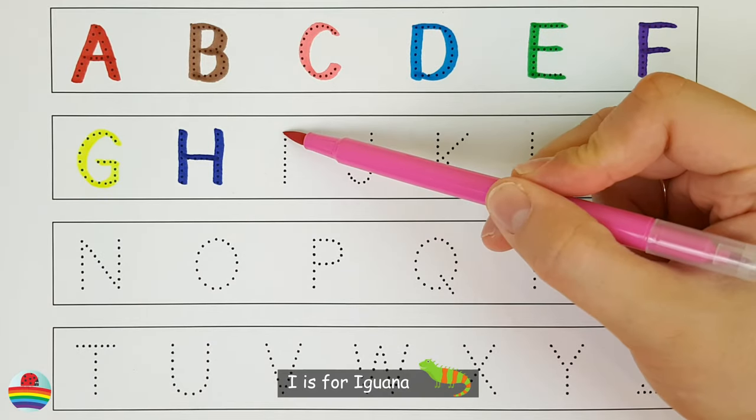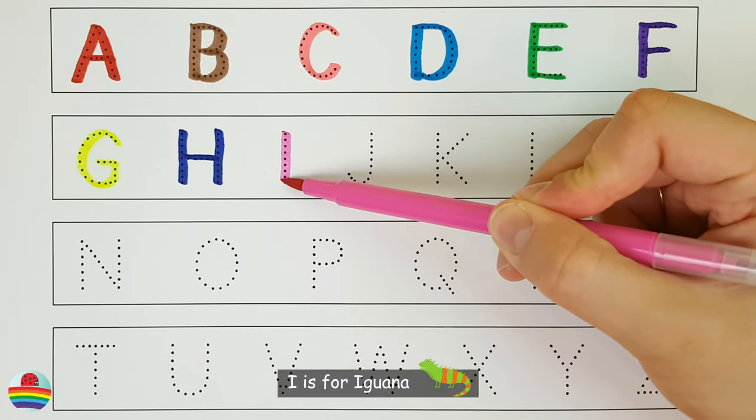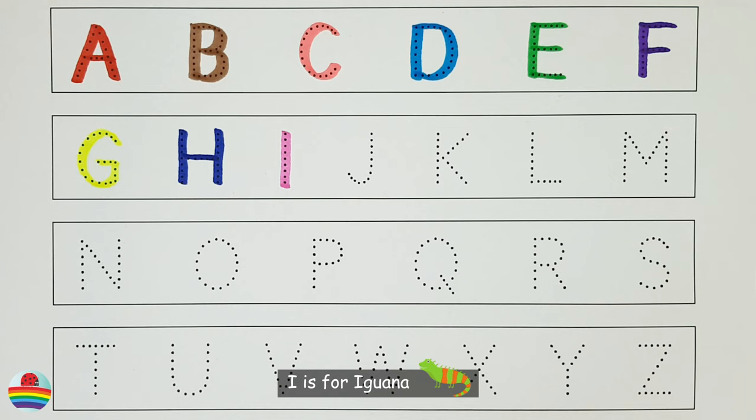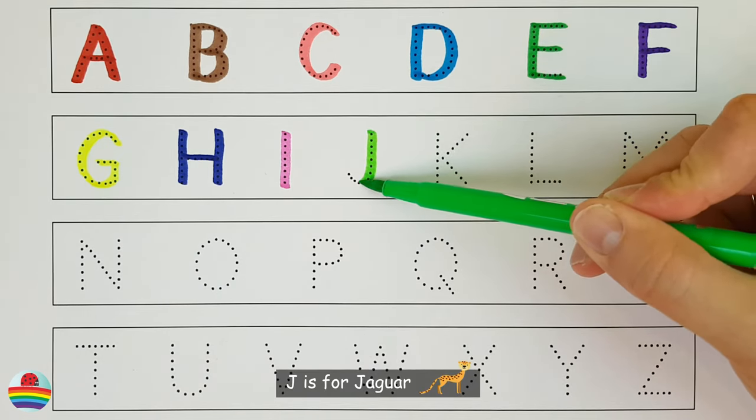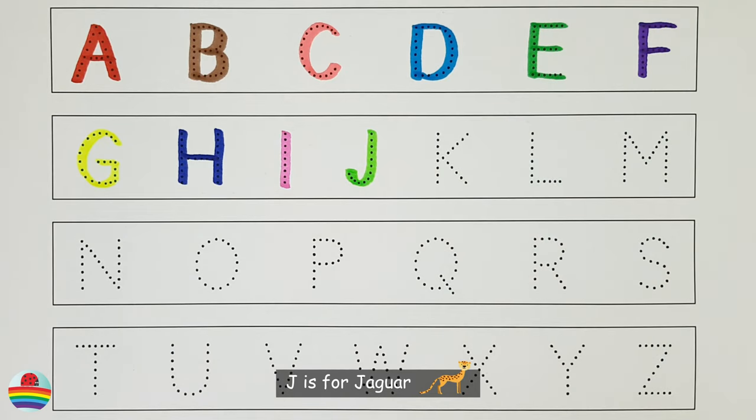I. I is for iguana. I. J. J is for jaguar. J.